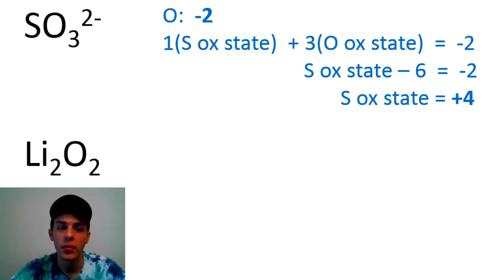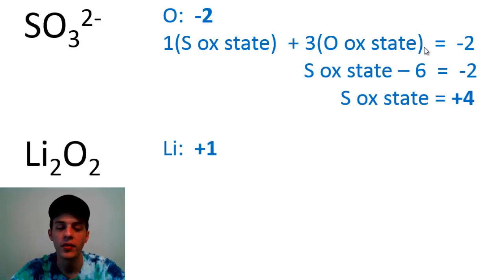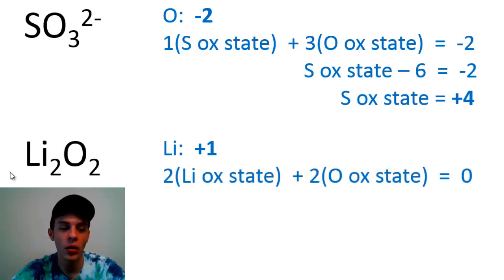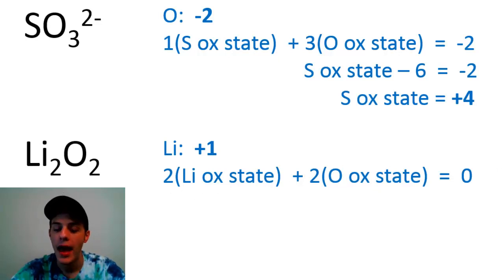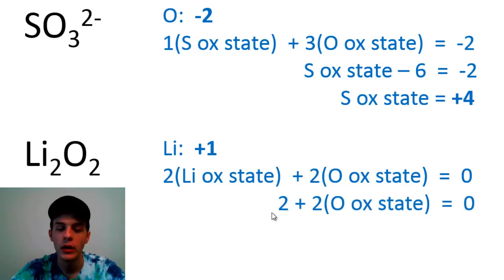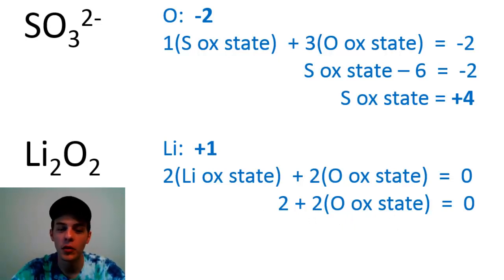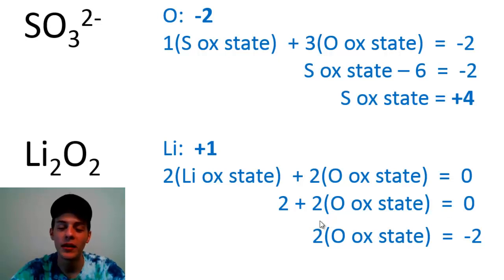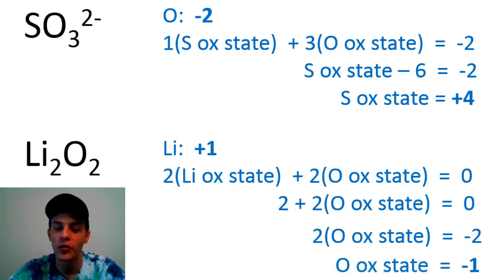In the final example, lithium peroxide Li2O2. Lithium is a Group 1A alkali metal, so it has an oxidation state of +1. Using rule three, two times the oxidation state of lithium plus two times the oxidation state of oxygen equals zero. Two times +1 is 2, so 2 plus twice the oxidation state of oxygen equals zero. Subtracting 2 from both sides and dividing by 2 gives the oxidation state of oxygen in lithium peroxide as −1.